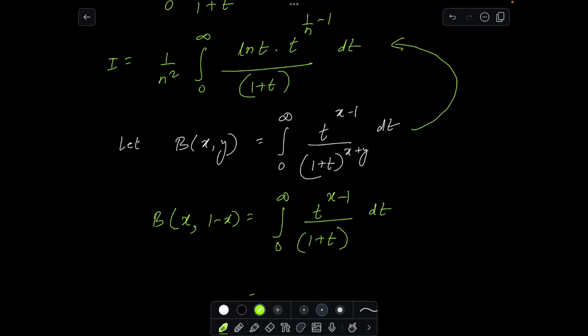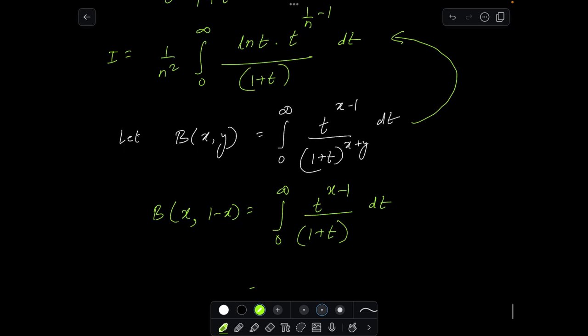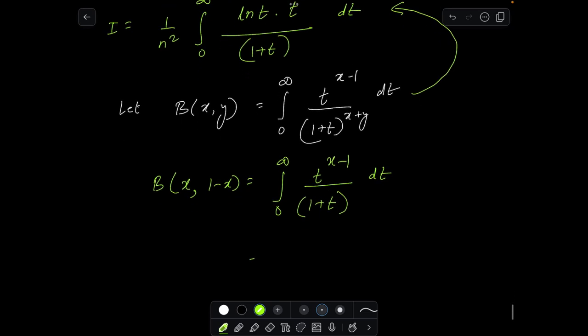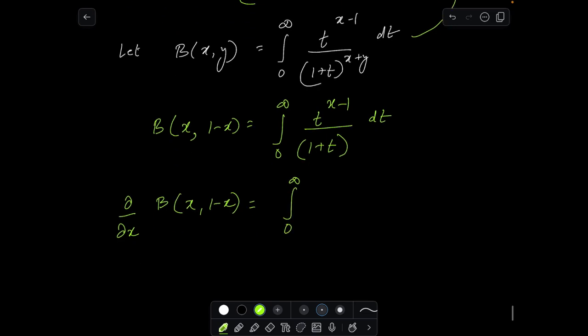Now second thing I want ln of t to come out. How will I get ln t? If you see that carefully, it will come from partially differentiating this expression with respect to x. So what I will do is I will do a partial derivative of beta function of x, 1 minus x with respect to x.